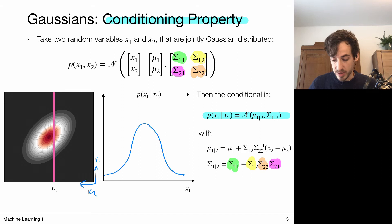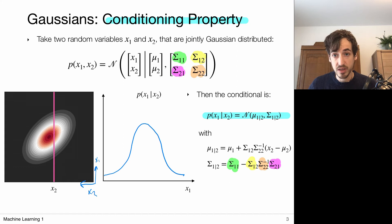I don't want you to remember these particular formulas. I just want you to know that whenever I have a Gaussian that I can factorize into an x1 variable and an x2 variable, I can obtain conditional probability distributions which are again Gaussians, and I am able to derive the mean and covariance of those Gaussians.